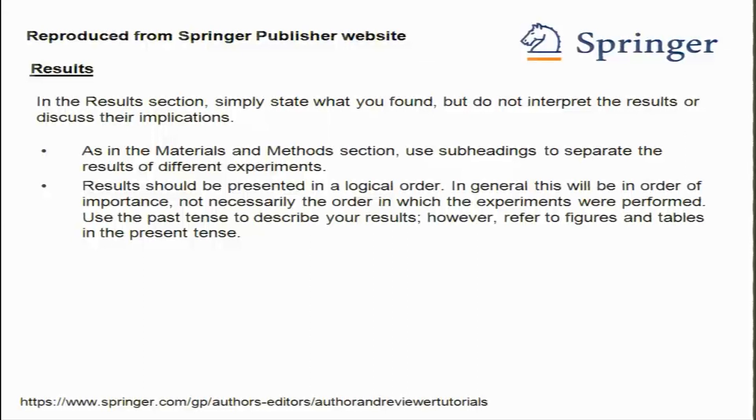Use the past tense to describe your results — you say that we carried out this particular experiment and these are the results that we found. Refer to figures and tables in the present tense because data cannot always be presented in the text. You would have it in the form of a table, a chart, or a figure. Therefore you should state it like 'as shown in figure one' — not 'as was shown in figure one'.